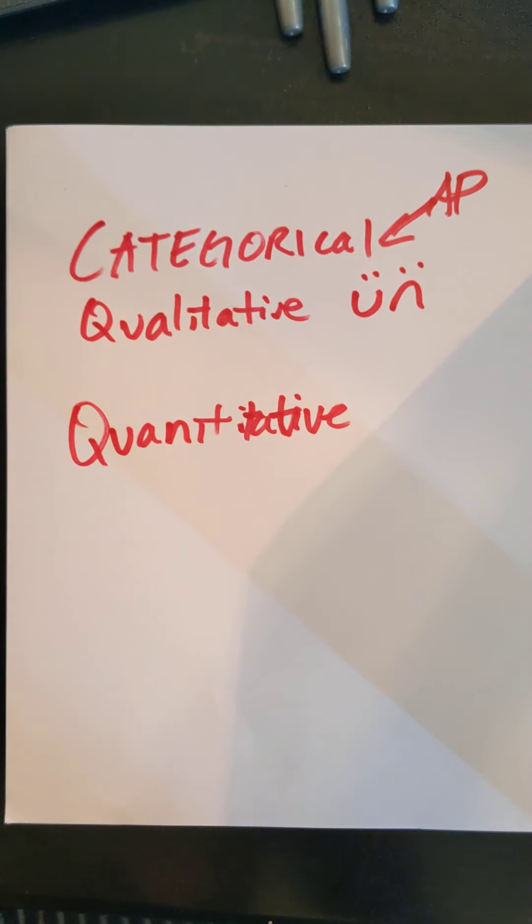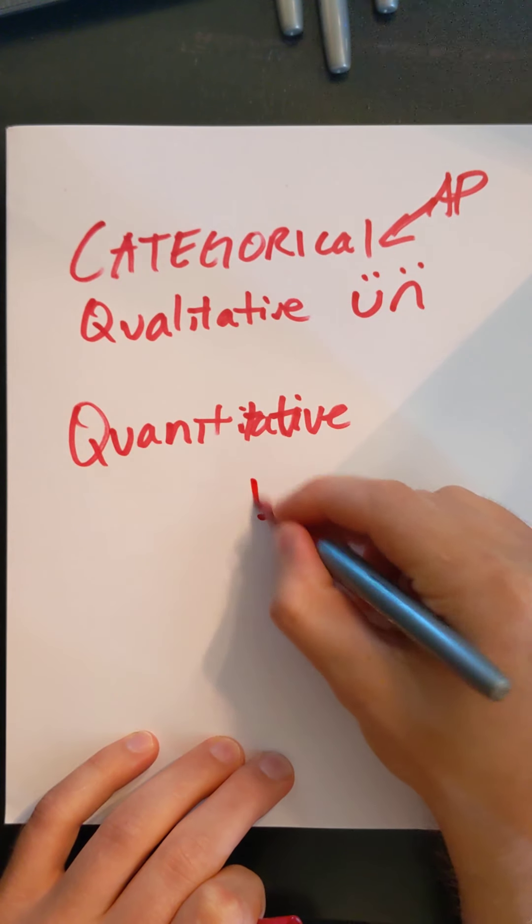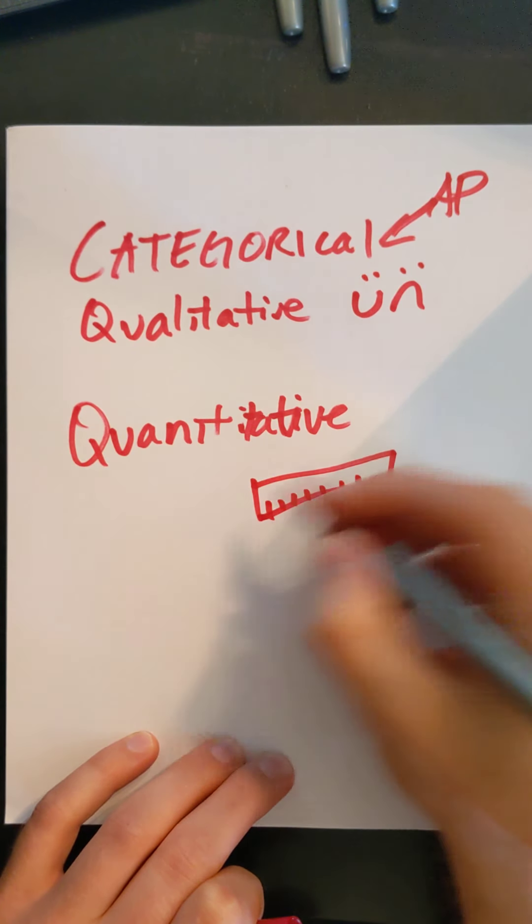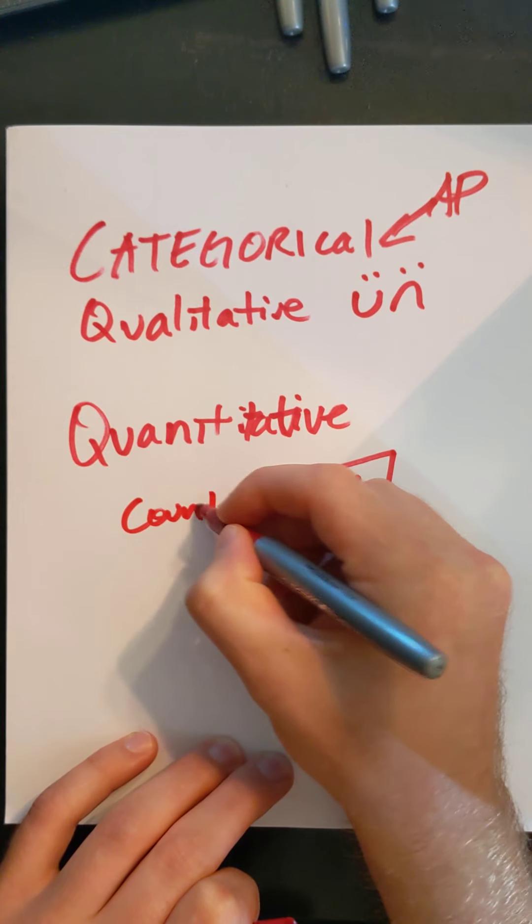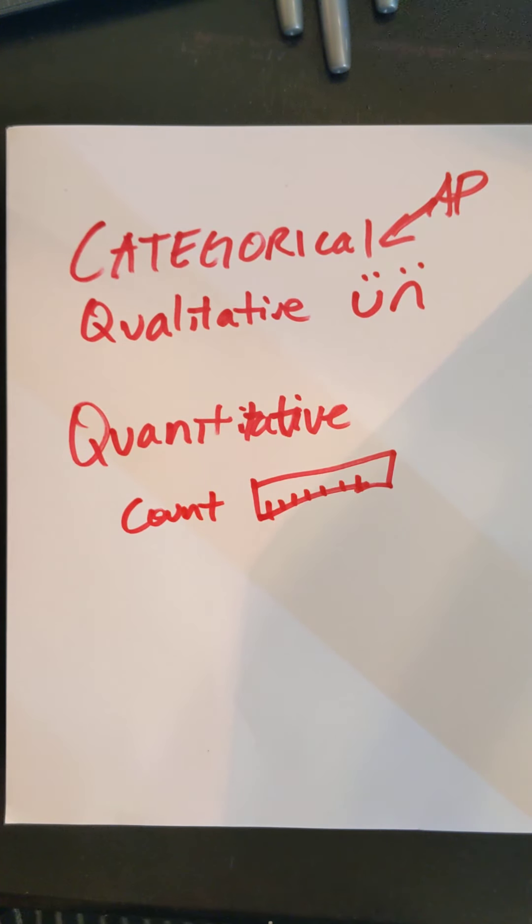Quantitative would be something you could measure or count. So if I looked at my class website and counted how many of you had already signed up for my AP Classroom, that would be a quantitative measure.